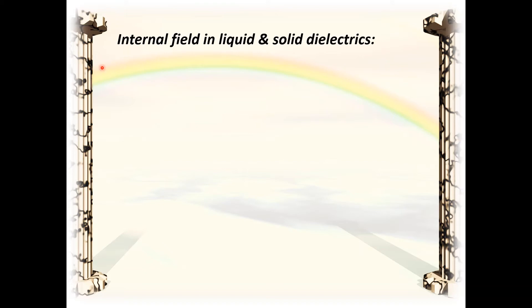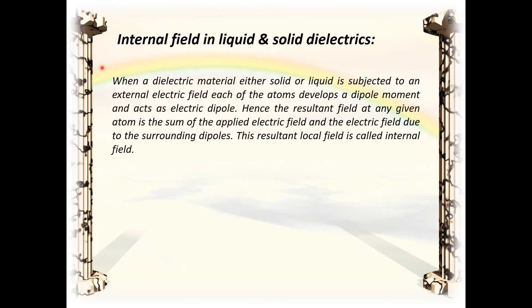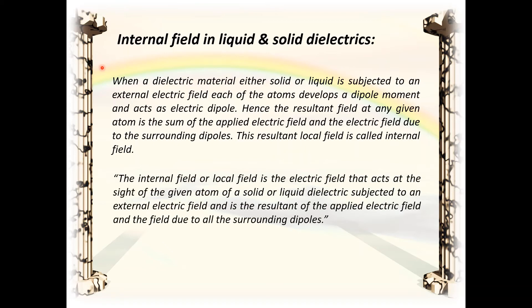When a dielectric material, either solid or liquid, is subjected to an external electric field, each atom develops a dipole moment and acts as an electric dipole. The resultant field at any given atom is the sum of the applied electric field and the field due to the surrounding dipoles. This resultant local field is called the internal field. The internal field or local field is the electric field that acts at the site of a given atom in a solid or liquid dielectric, and is the resultant of the applied field and the field due to all surrounding dipoles.